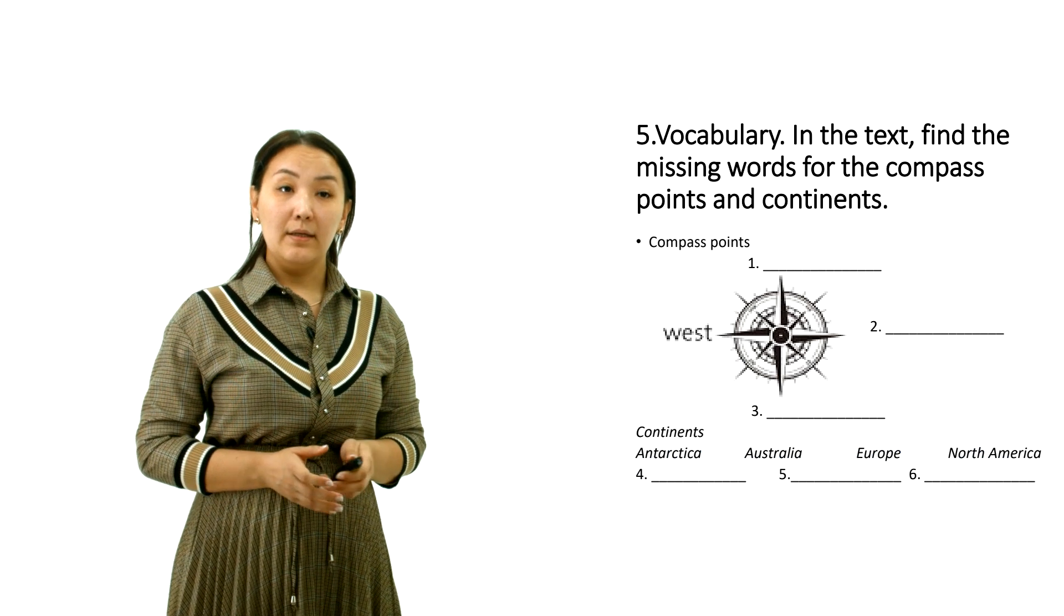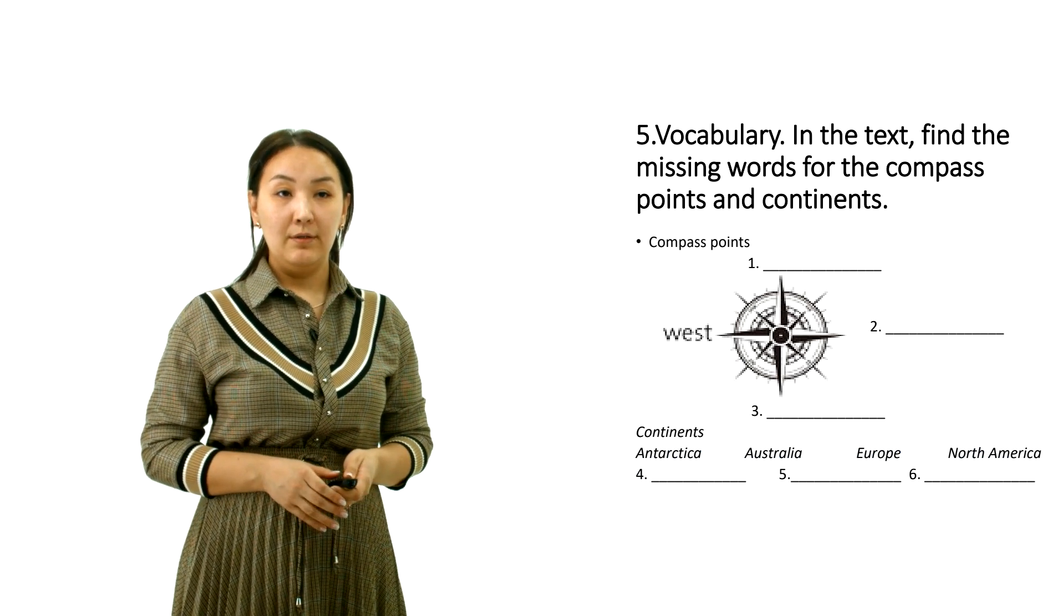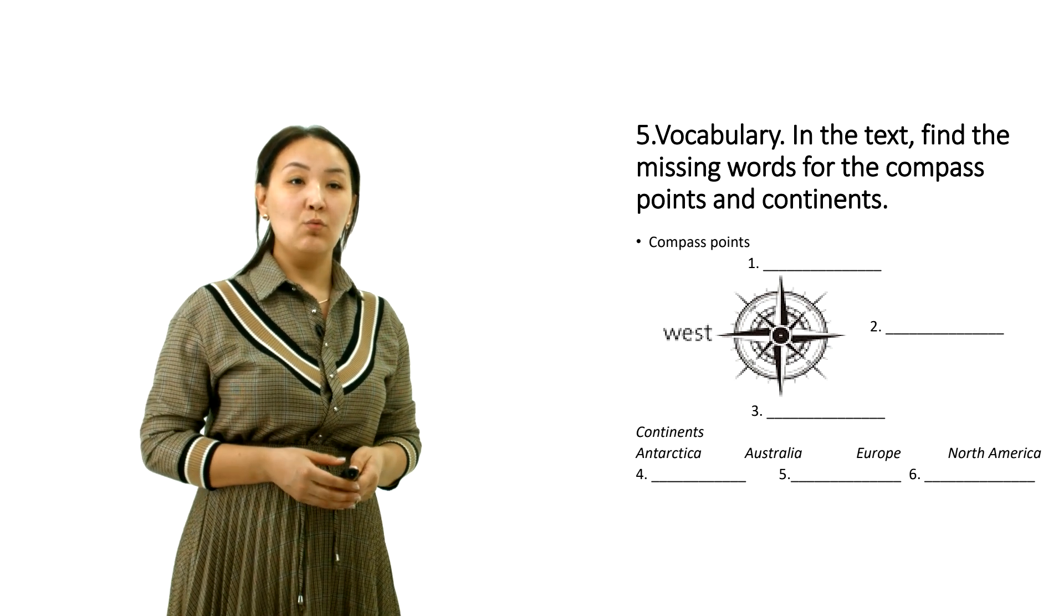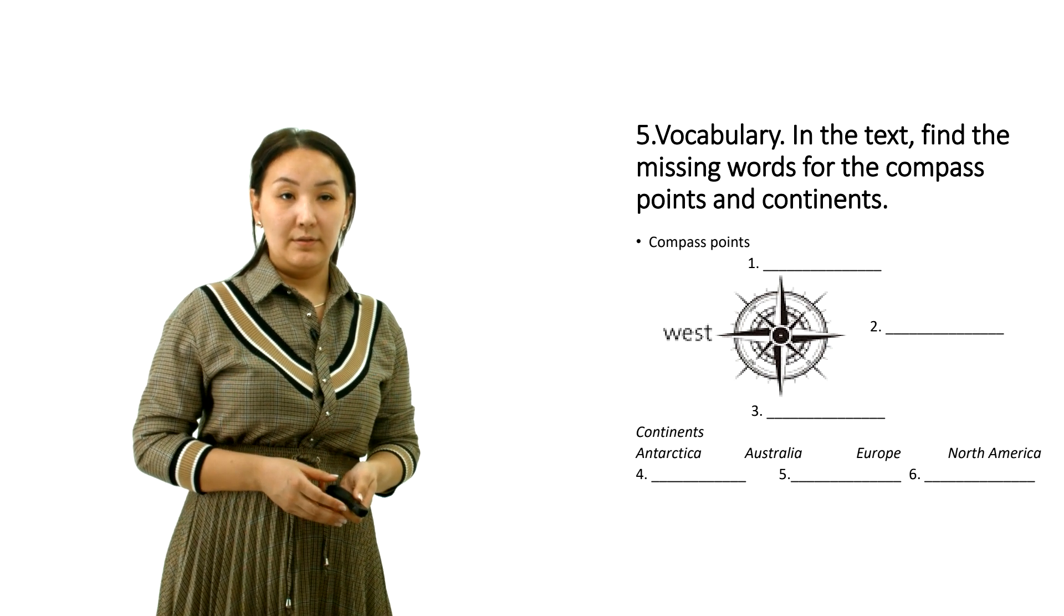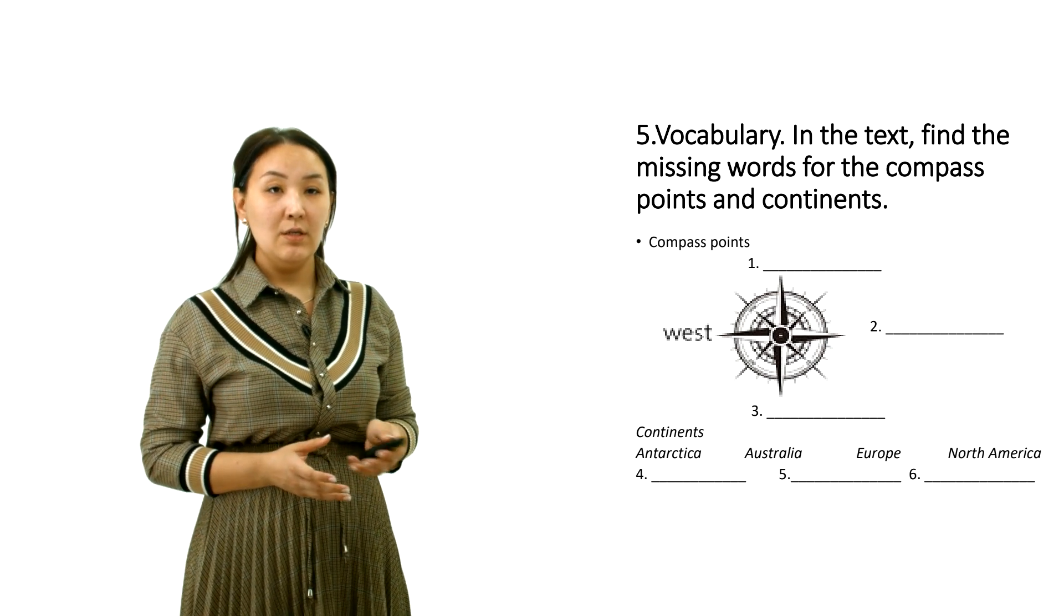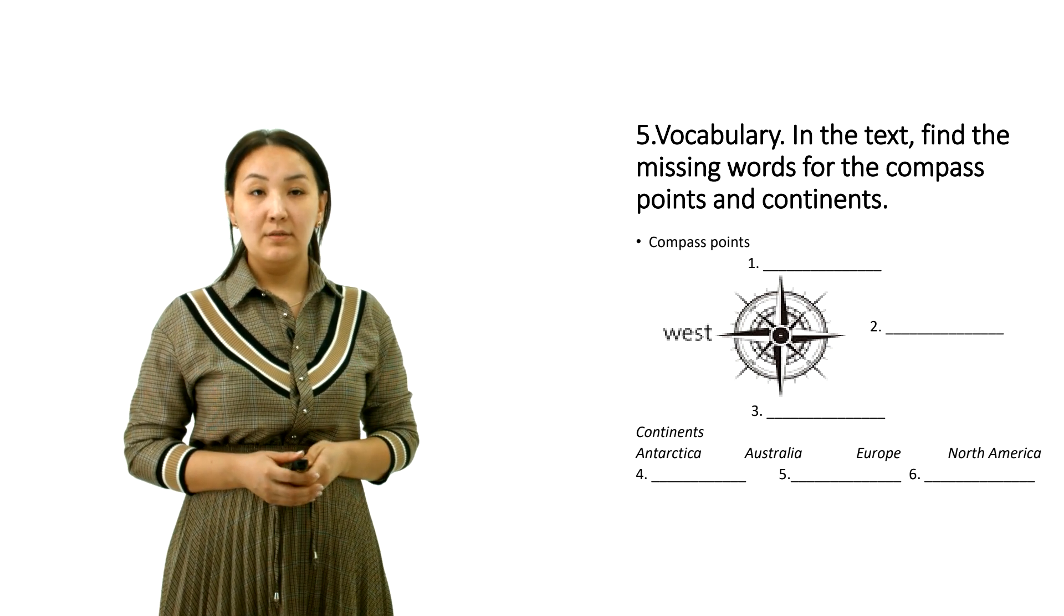The next exercise is connected with vocabulary. In the text, find the missing words for the compass points and continents. As you see here in the picture, the West is shown.